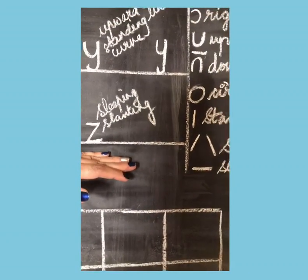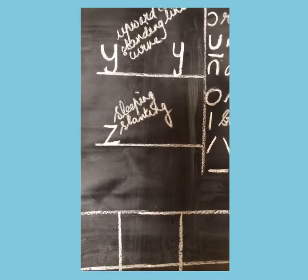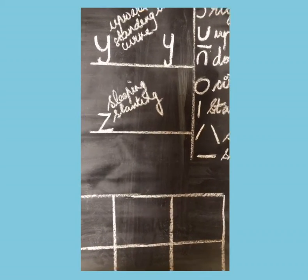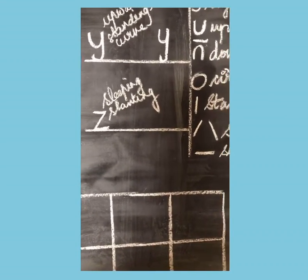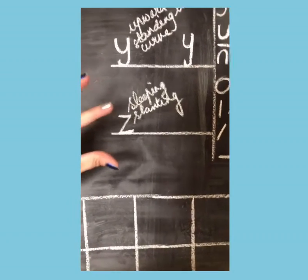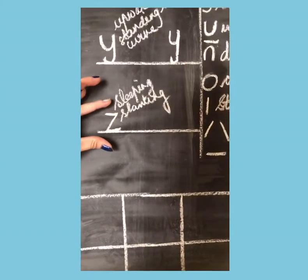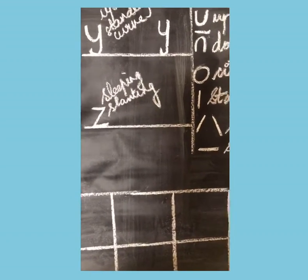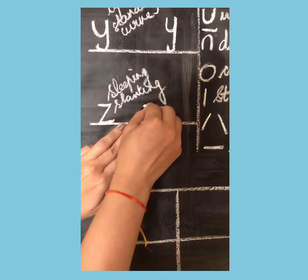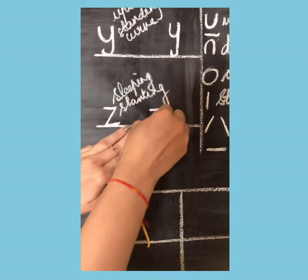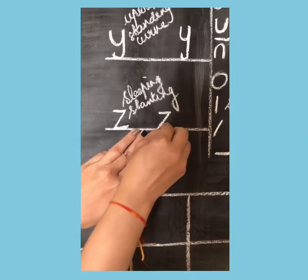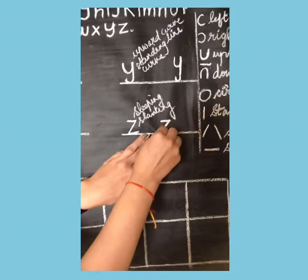Next after Y comes alphabet Z — this is the last alphabet we are going to learn, A to Z. To write small alphabet Z, you know how to write the big alphabet Z; you just write a smaller form. First step: make a sleeping line, a slanting line, and then again a sleeping line. This is small alphabet Z.